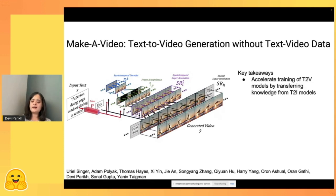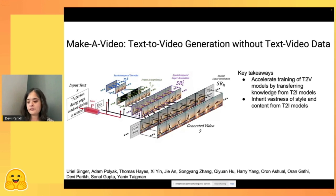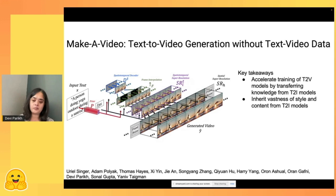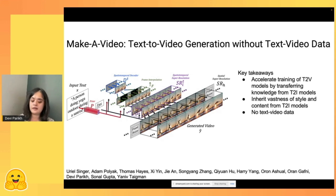Key takeaways: this allows accelerated text-to-video generation by directly transferring knowledge from text-to-image models through parameter initialization. These models inherit the vastness of styles and content diversity from text-to-image models, so even if the video training set lacks fantastical content like unicorns, the model can still generate it. And it doesn't need text-to-video data, so it has the potential to scale by training on more and more videos.